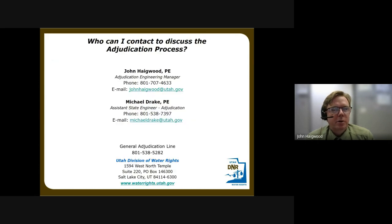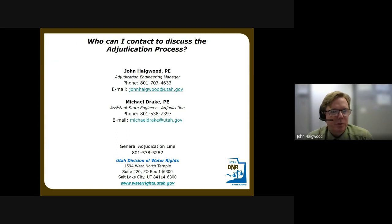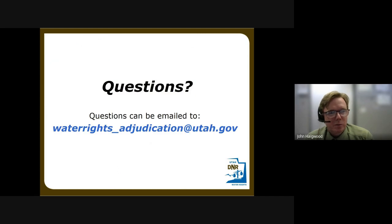To discuss the adjudication process, you can contact John Higwood at johnhagwood@utah.gov or by the listed phone number, or Michael Drake at michaeldrake@utah.gov, also with a listed phone number. You can also use the general adjudication line at 801-538-5282, or come into our office — we have a public inquiry team that would love to help you. We are now past the general presentation and can open the floor to any questions.